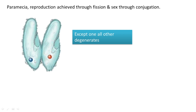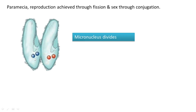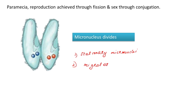What happens next to this remaining single haploid micronucleus? It undergoes a division to produce two micronuclei with distinct names — one is called the stationary micronucleus and the other is called the migratory micronucleus.